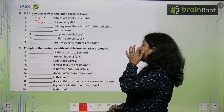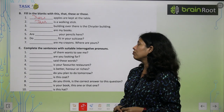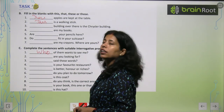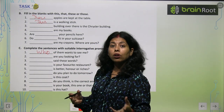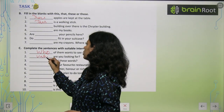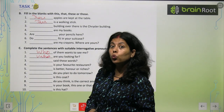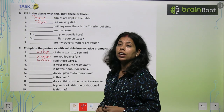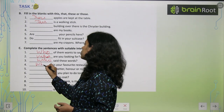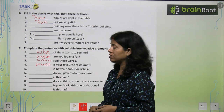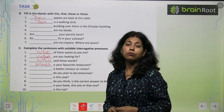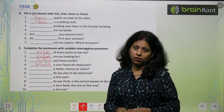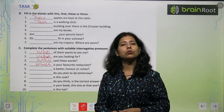Now, interrogative pronouns exercise. Dash of them wants to see me — Who of them wants to see me. Dash are you looking for — What are you looking for. Dash said these words — Who said these words. Dash is your favourite restaurant — Which is your favourite restaurant. I have done four; the remaining six you have to complete as homework.